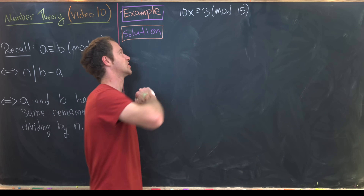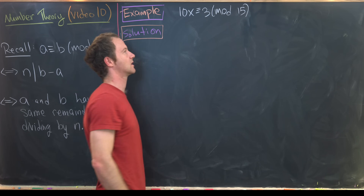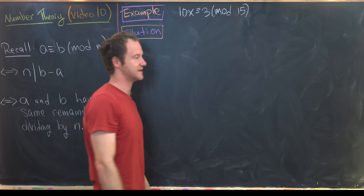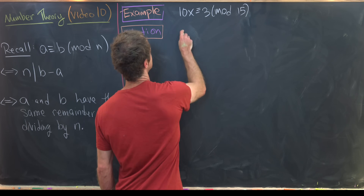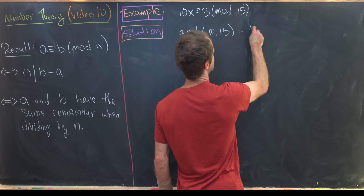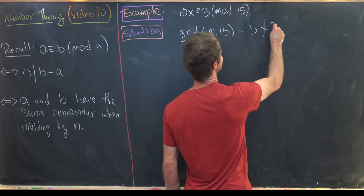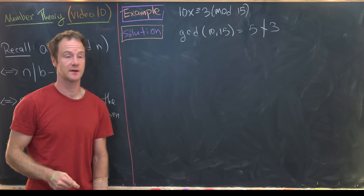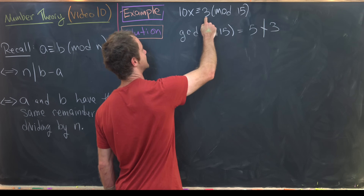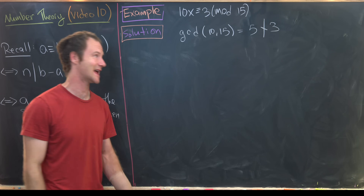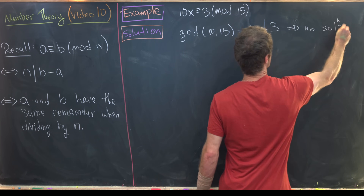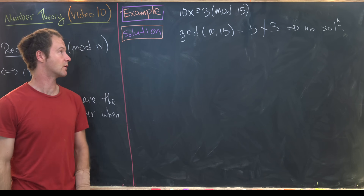For our next example, we solve 10x ≡ 3 mod 15. We calculate gcd(10, 15) = 5, but 5 does not divide 3. The GCD of the coefficient and modulus must divide the right-hand side, and that fails here. So there is indeed no solution.